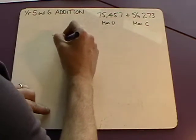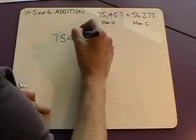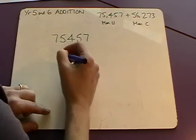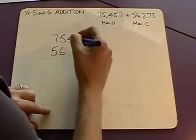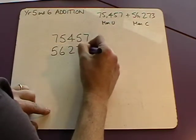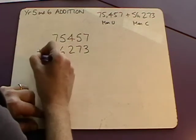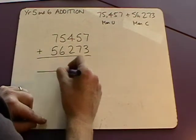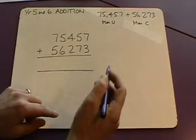We're going to record that as 75,457 with 56,273 underneath. Put our addition symbol, draw our lines with our ruler and then we can begin.